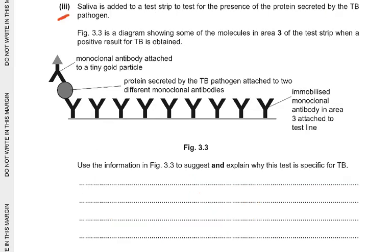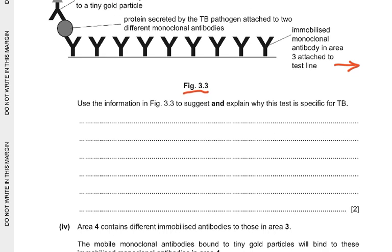Part 3: Saliva is added to a test strip to test for the TB protein. Figure 3.3 shows molecules in area 3 when a positive TB result is obtained: a monoclonal antibody attached to a gold particle, and the TB protein attached to two different monoclonal antibodies — one mobile and one immobilized. The immobilized monoclonal antibody has a binding site complementary in shape to the TB protein; it will only bind with protein secreted by the TB pathogen, and gold-particle antibodies are only held in place if that protein is present.